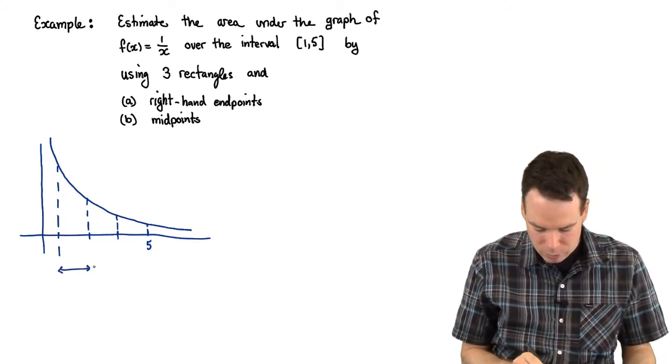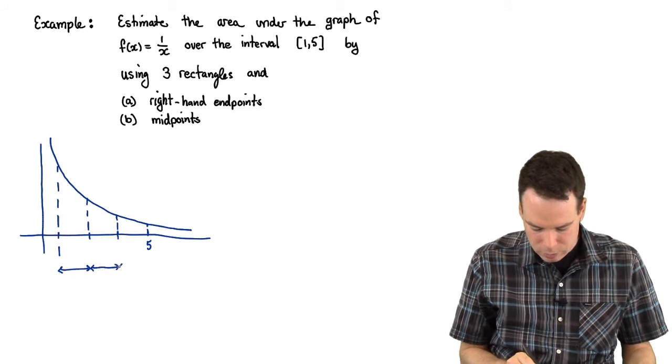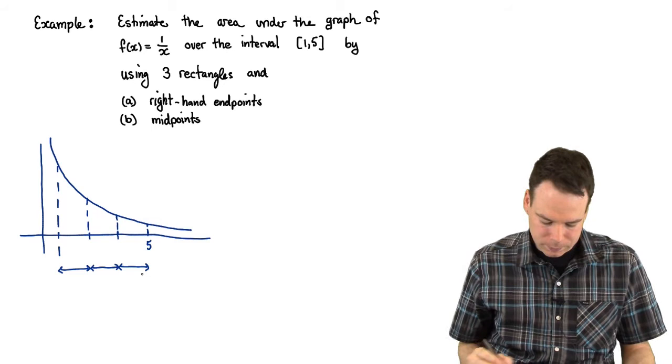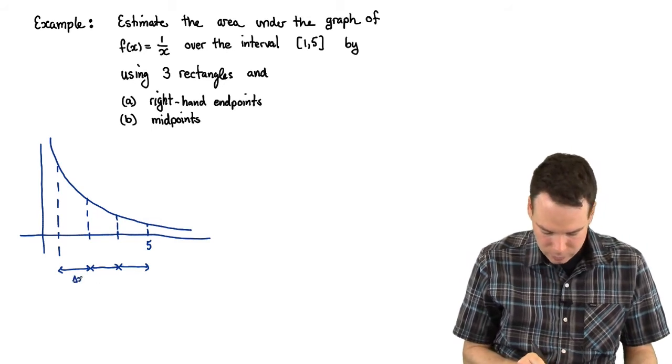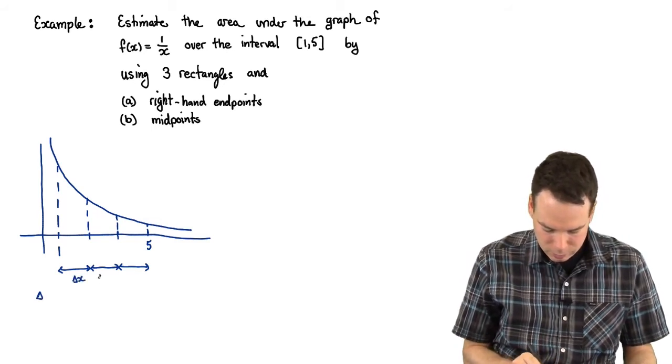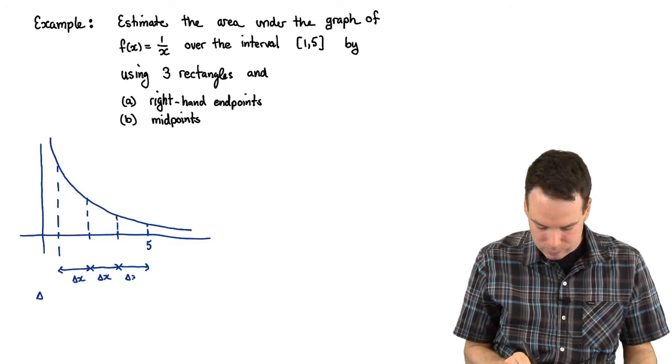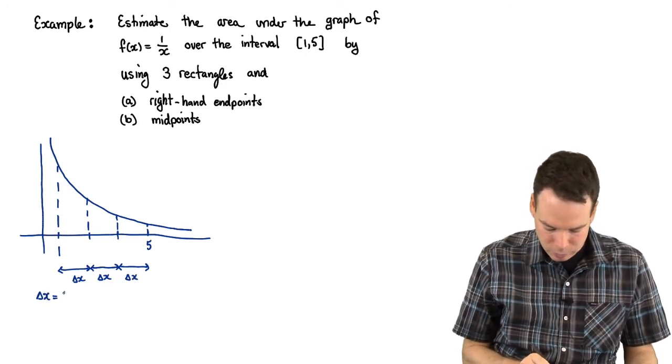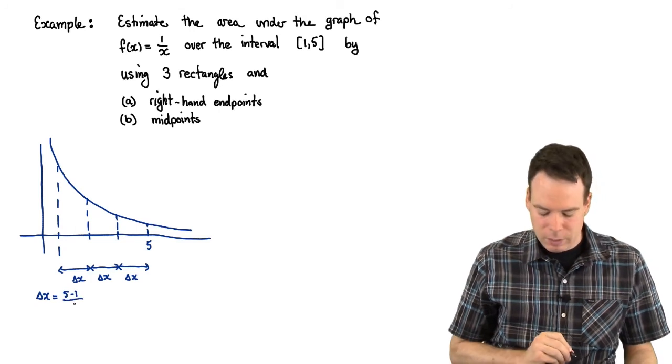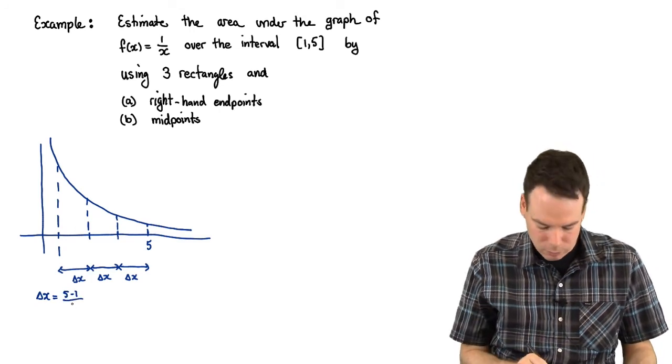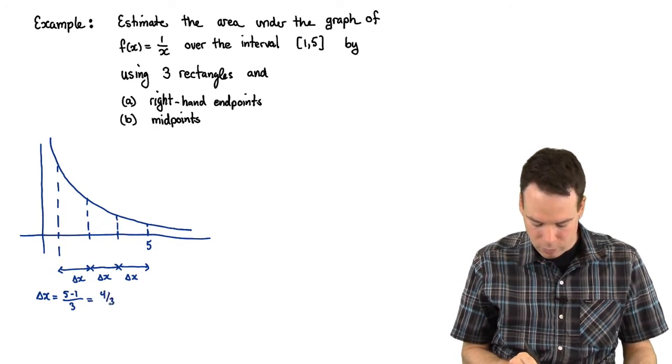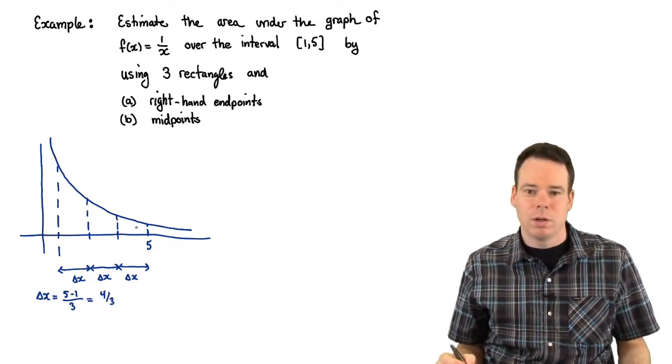Once we split it up into three subintervals, in this case three equal width subintervals, what's the width of them? That would be delta x. Delta x is the length of the whole interval, which is 5 minus 1, divided by the number of subintervals you split it up into, which was three. So that would be 4 thirds. That's the width of each of those subintervals.